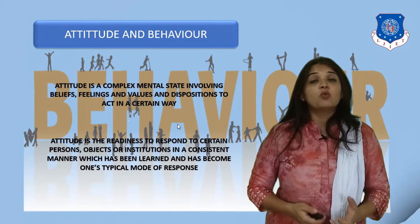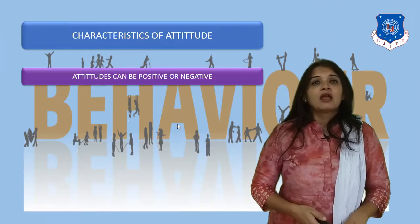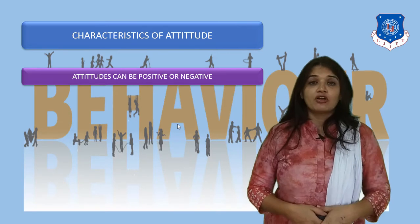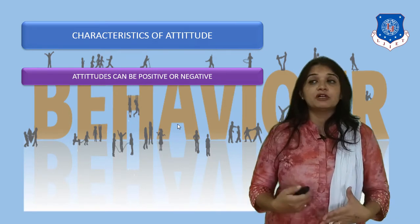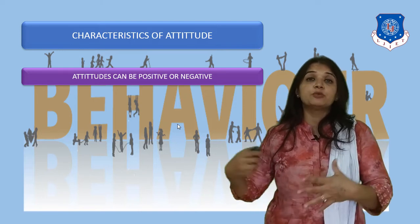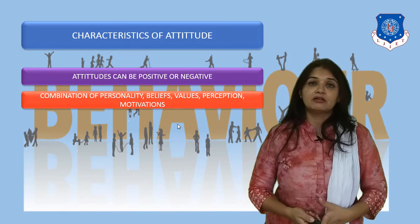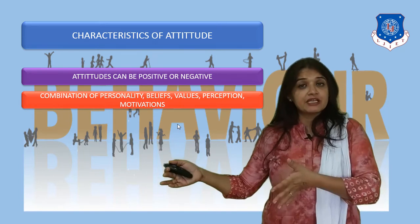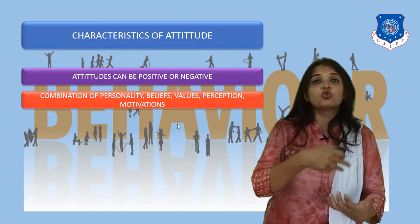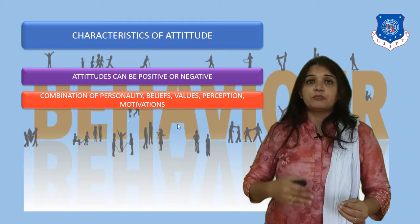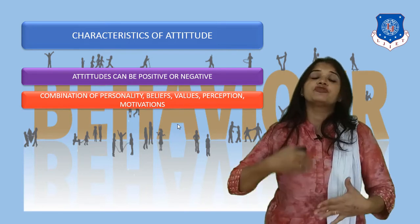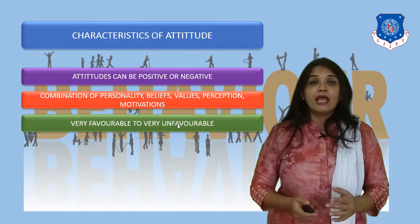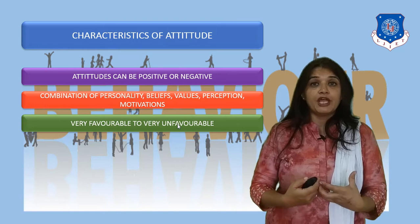Now let us see the characteristics of attitude. First, attitudes can be either positive or negative — in terms of likes, dislikes, or judgments of something as good or bad — and a person will likely behave accordingly. Secondly, attitude is a combination of personality, beliefs, values, perceptions, and motivations. Any person's attitude actually shows all these things, because beliefs, personality, and values all contribute to the attitude — that is, the individual's approach towards anything. Attitudes can be on both extremes: very favorable or very unfavorable.